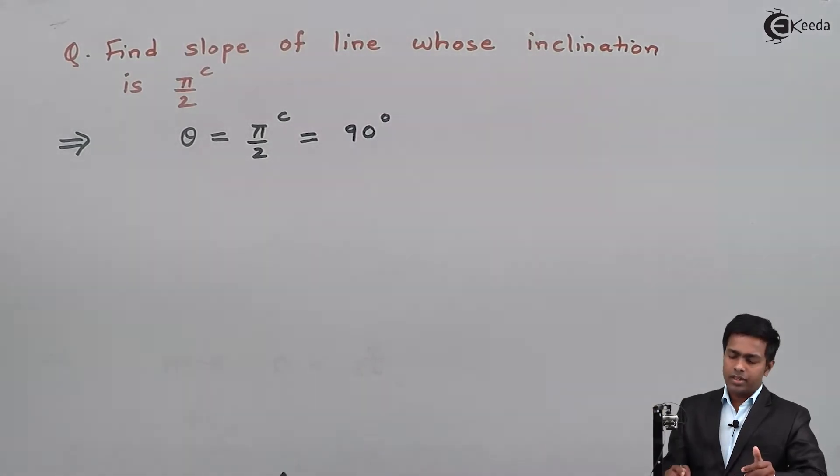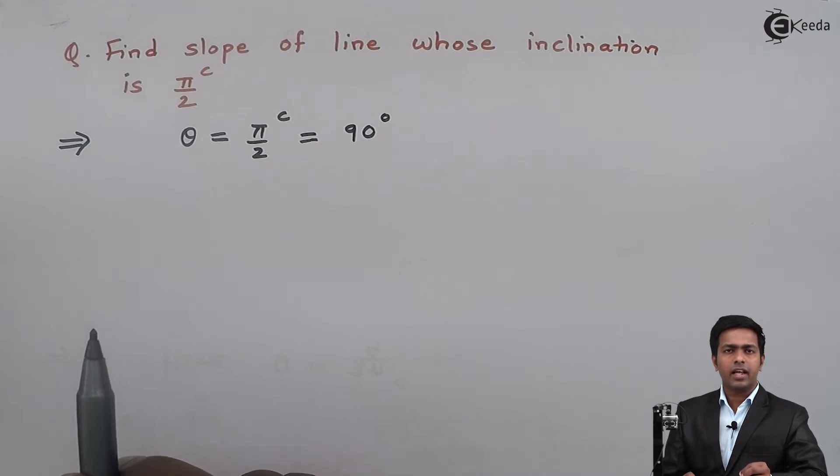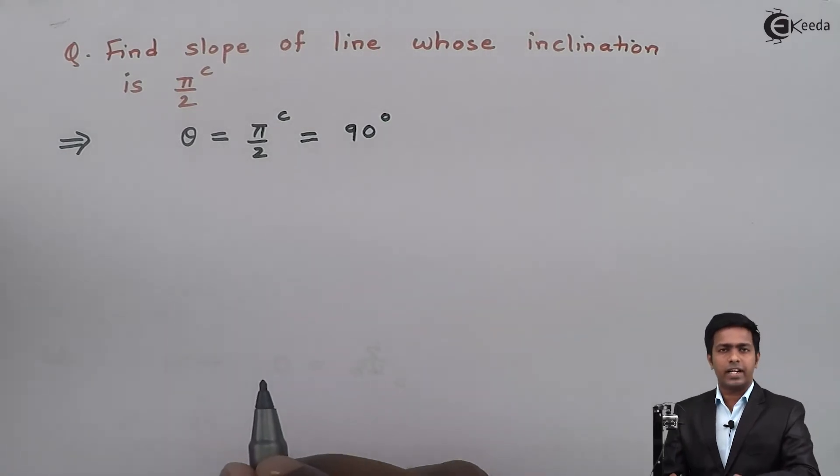This means the line is making an angle of 90 degrees with the x-axis, and we want to find the slope of that line.